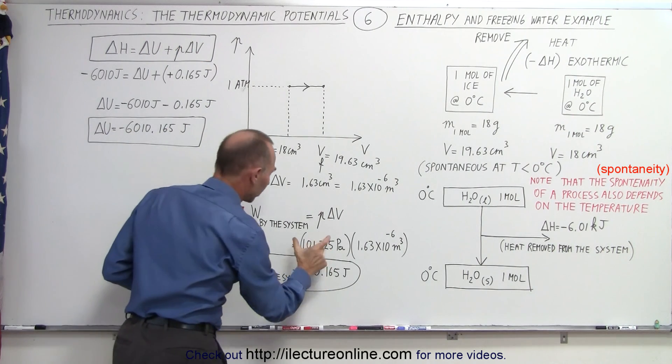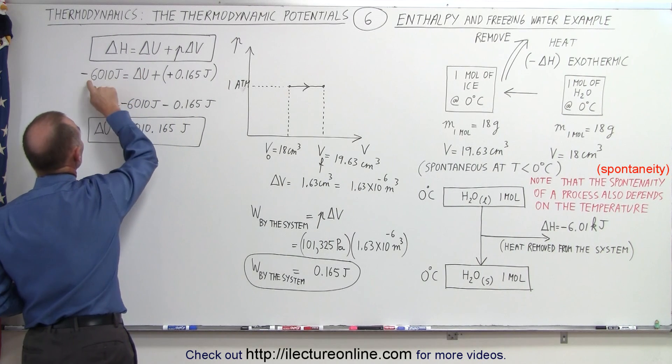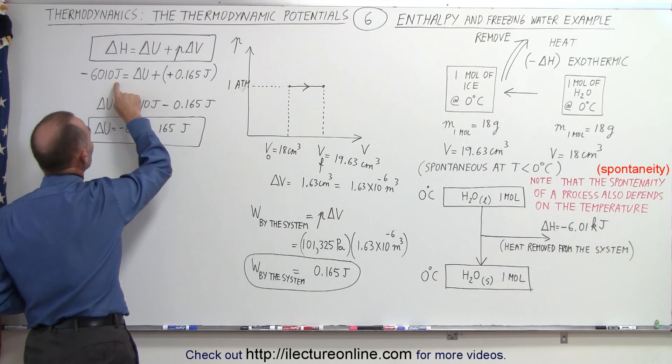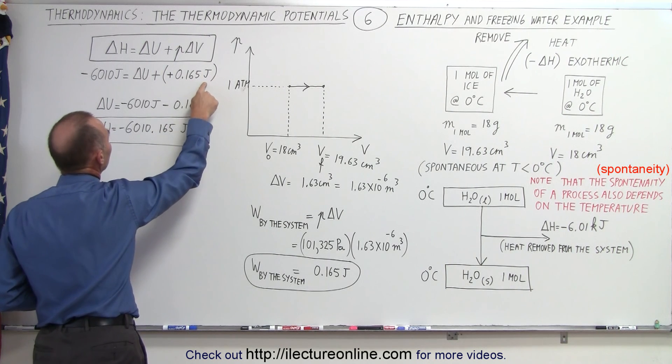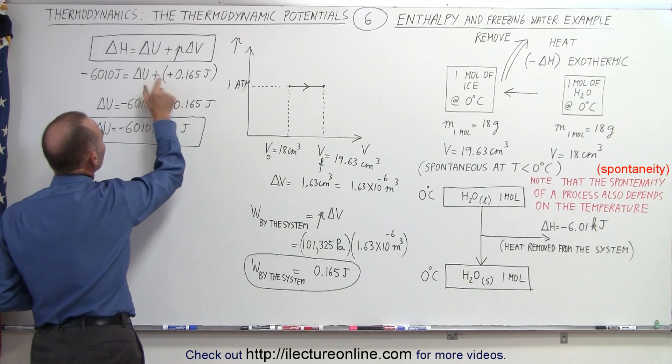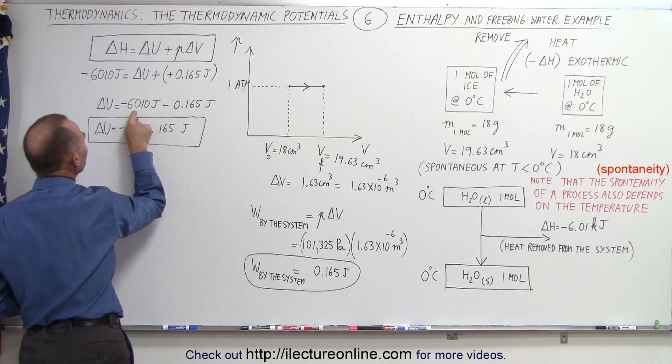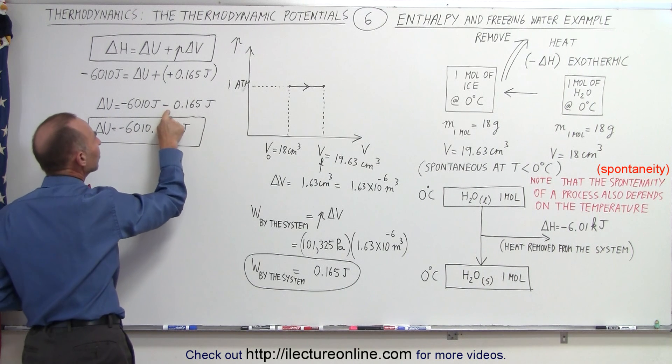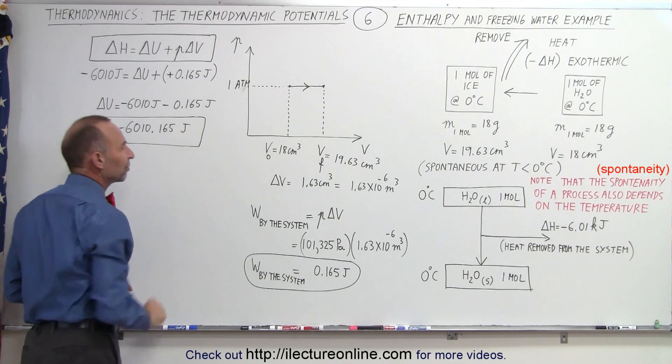How does that fit into the equation of enthalpy? The change in enthalpy is equal to the change in internal energy plus P delta V. P delta V is the work done by the system, and so we can see that delta H is minus 6,010 joules, and that P delta V is now a positive 0.165 joules. If we solve this for delta U by moving this to the other side and turning the equation around, delta U is equal to minus 6,010 joules minus 0.165 joules, which means that delta U is now minus 6,010.165 joules.